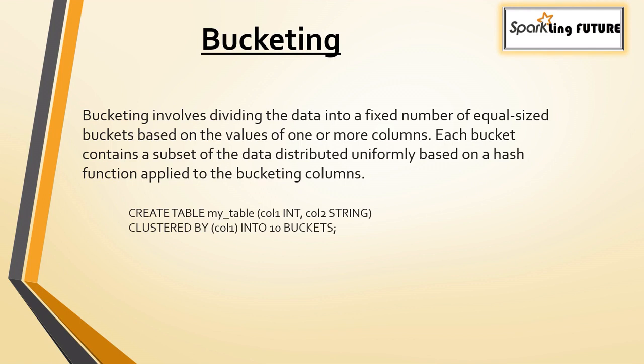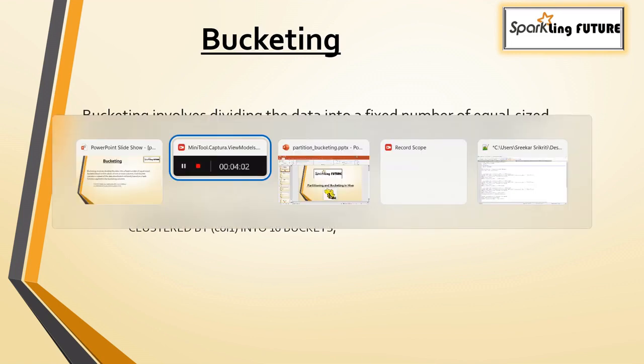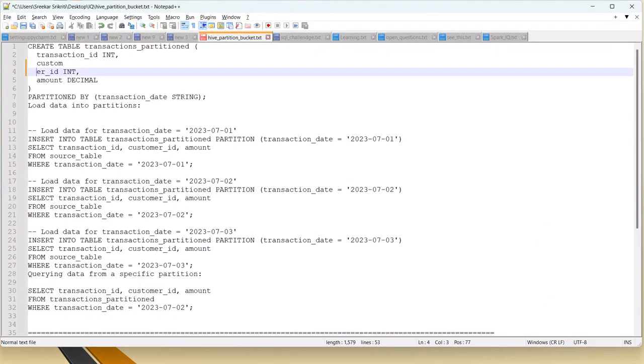If the data within a partition is still large, go ahead with further partitions. Now let's look at sample code. Here we have a transactions table with columns transaction_id, customer_id, amount, and partitioned by transaction_date. This way, whenever we want to see details for a particular transaction date, we can have a much quicker query search.